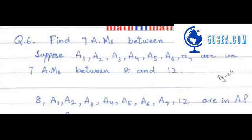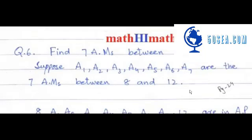It's Sayyid Mohamad Asanadar from MathHImath.com. Let's start with question number 6 of exercise 7.3. The statement of the question is find 7 A.M. between 8 and 12.